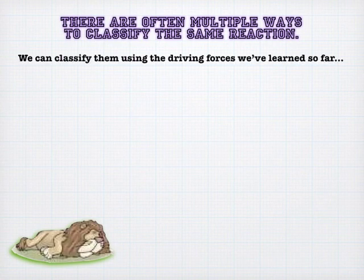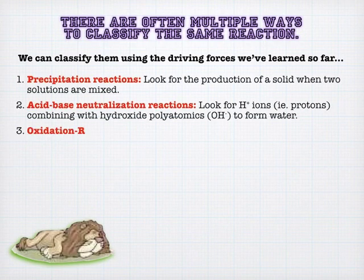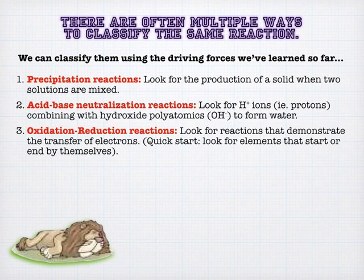We can start by classifying things the way we've talked about before, and that's the precipitation, acid base, and redox reactions. With a precipitation reaction, we're looking for two aqueous solutions and a product that is a solid. Acid base neutralization reactions, we're looking for an Arrhenius acid, an Arrhenius base, and then the production of salt and water. Very easy to identify.